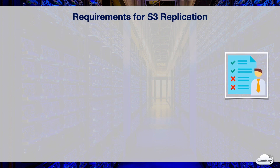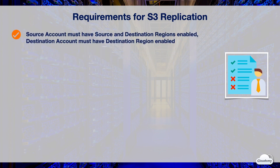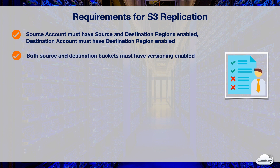For S3 replication to work, you must meet the following requirements. If the source bucket and destination bucket are owned by different AWS accounts, the source account must have both source and destination regions enabled, and the destination account must have the destination region enabled. S3 replication only works on versioning-enabled buckets — you must enable versioning on both source and destination buckets.